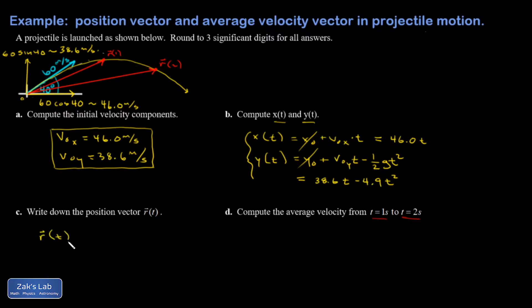We have r of t in general is given by the equation for the x coordinate i hat plus the equation of motion for the y coordinate j hat. And I can plug in and I get 46.0 t i hat plus 38.6 t minus 4.9 t squared j hat.